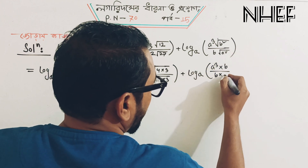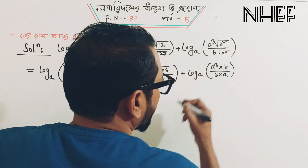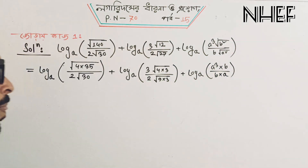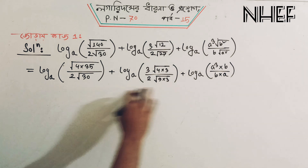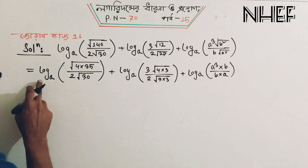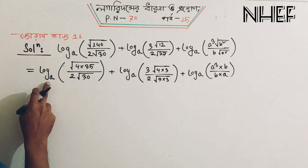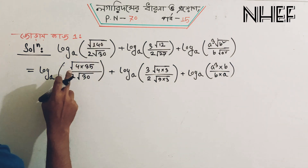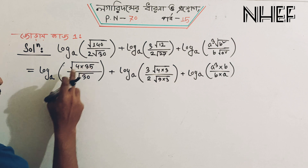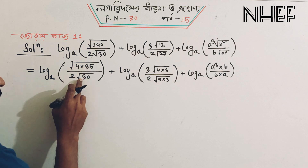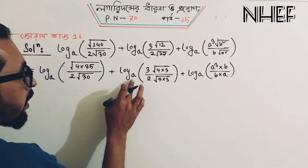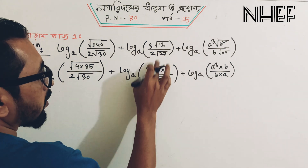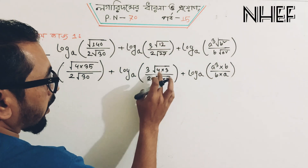We can calculate the value of a. So you can see: log a base, root bar 1.4 is 4. So we can see log a base root bar 1.4 is 4.